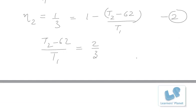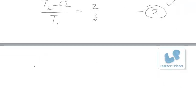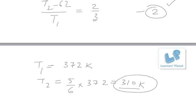Solving the first and second equations, we get temperature T1 = 372 Kelvin and T2 = 5/6 × 372 = 310 Kelvin. So the temperatures are 372 Kelvin and 310 Kelvin.